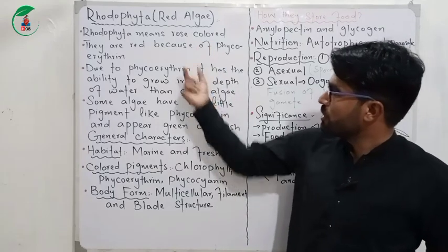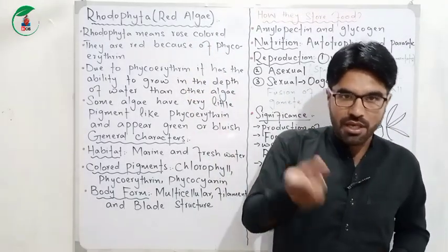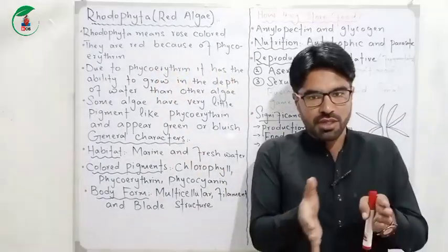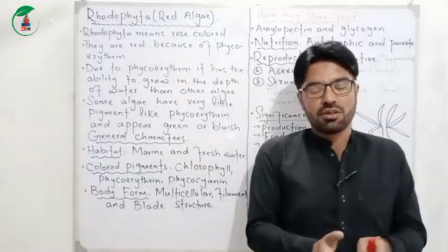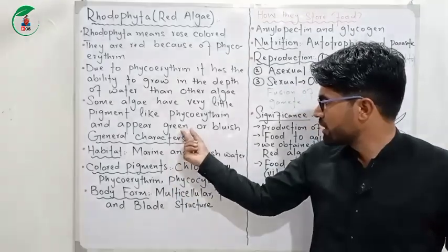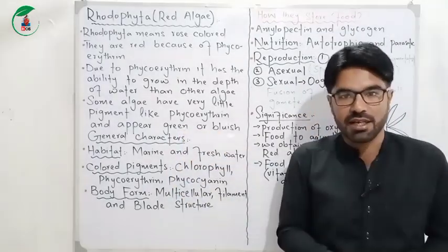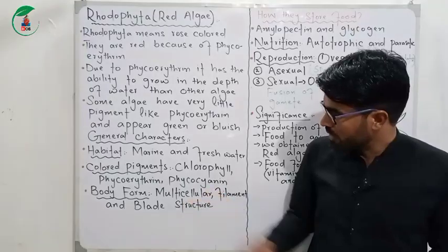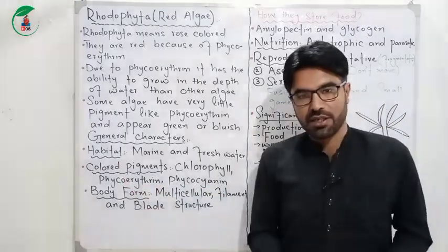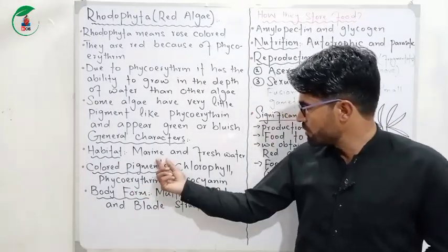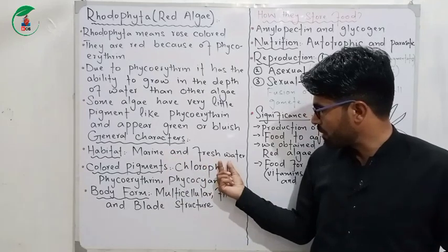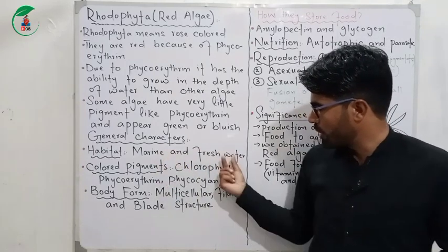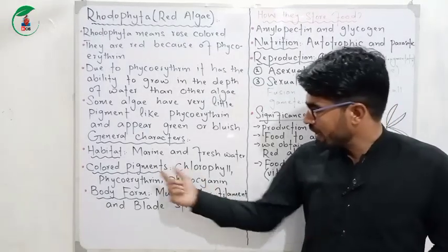If the phycoerythrin pigment is less, then red colour is less prominent, and green or blue may appear more. Regarding habitat, red algae are mostly marine but also found in fresh water.